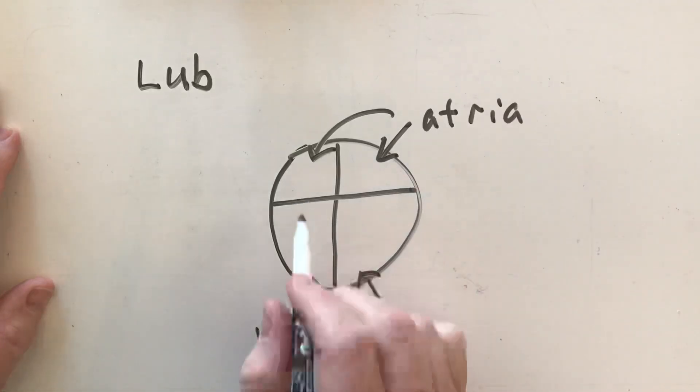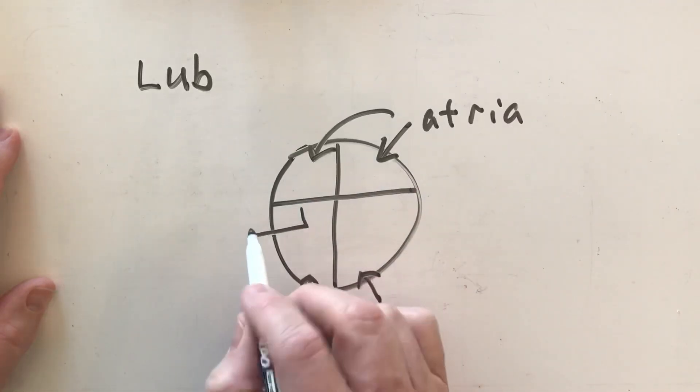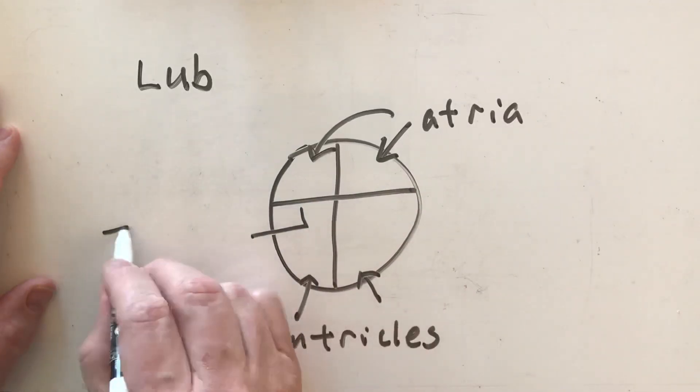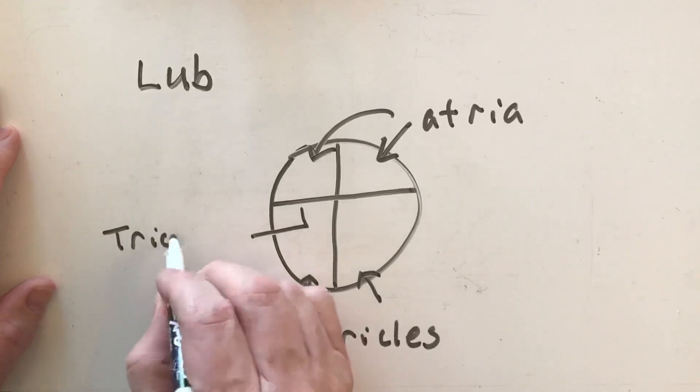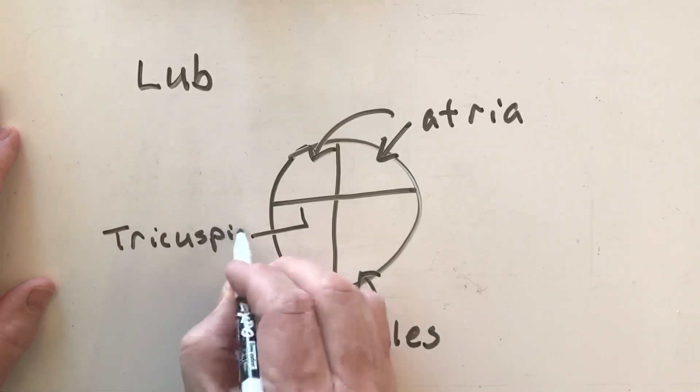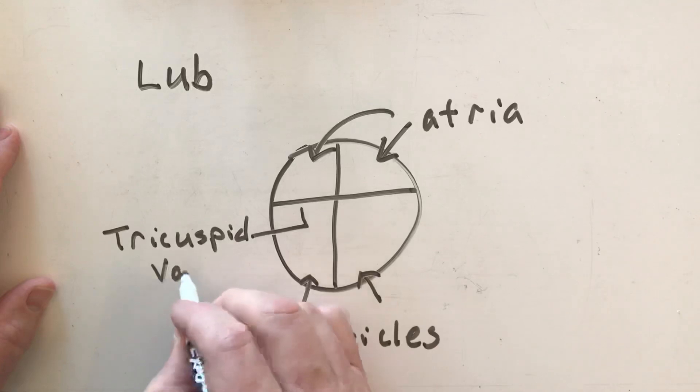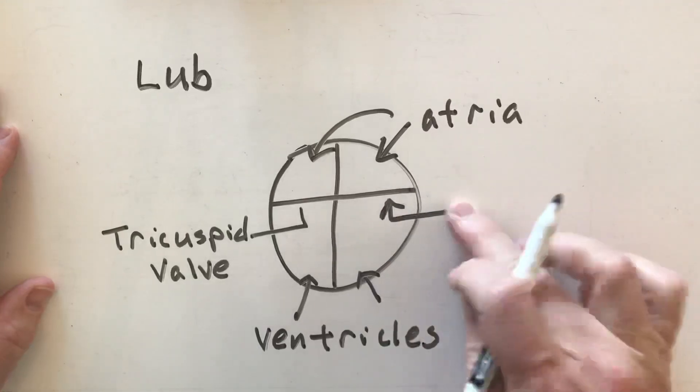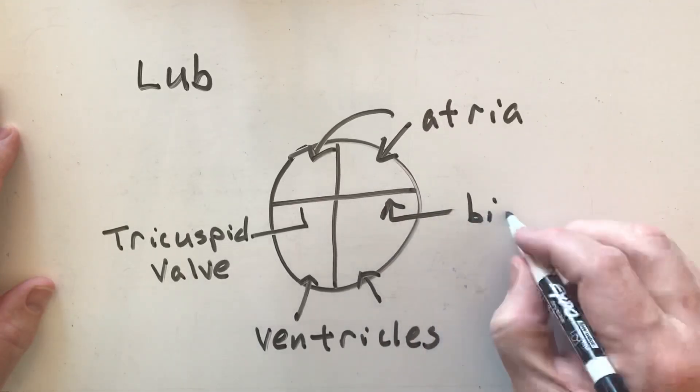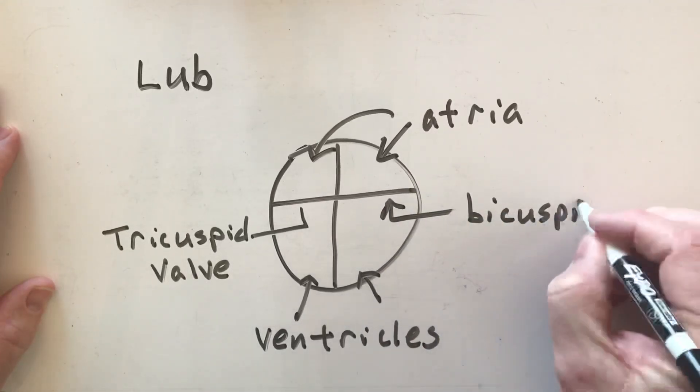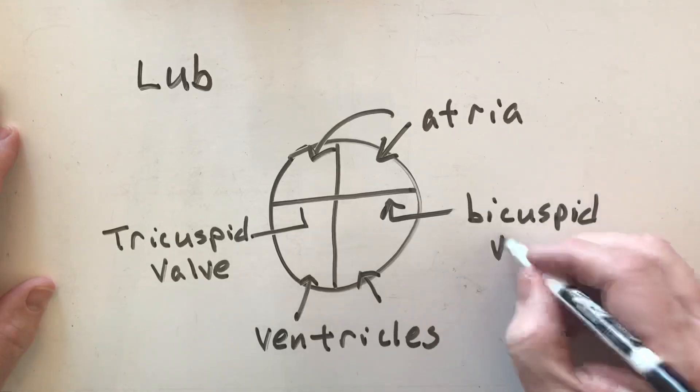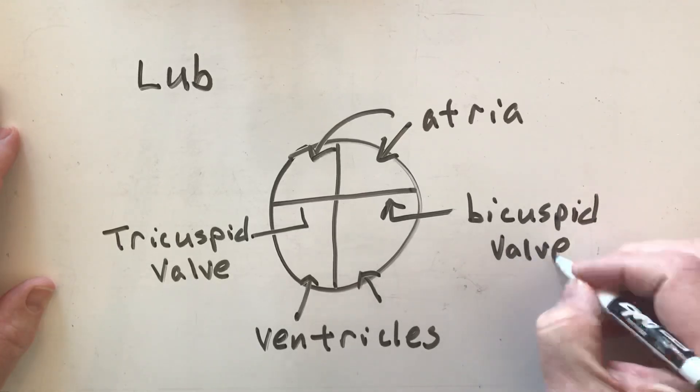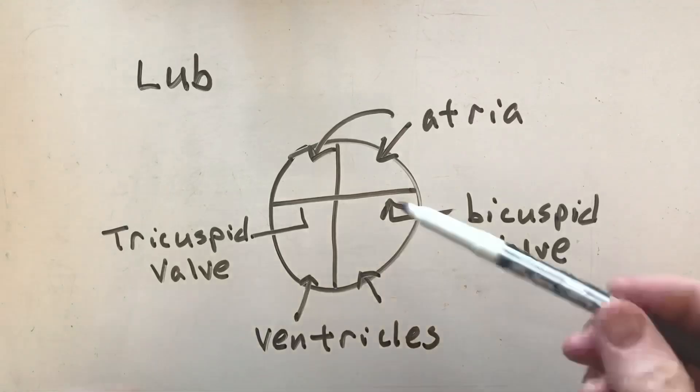If you recall, we had a valve here called the tricuspid valve. This is my tricuspid valve, and over here we had the bicuspid valve. So basically, the lub sound comes from when the tricuspid valve and the bicuspid valve close.